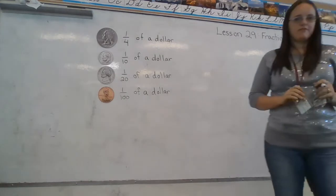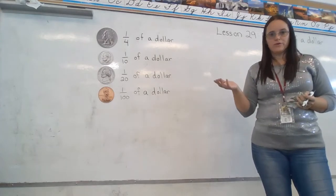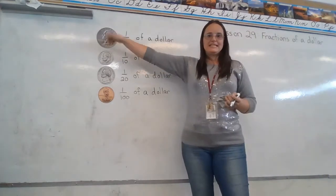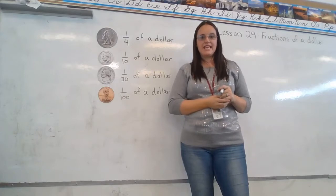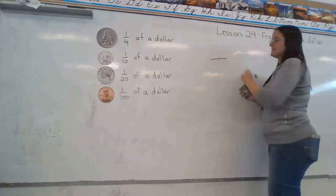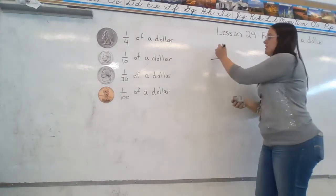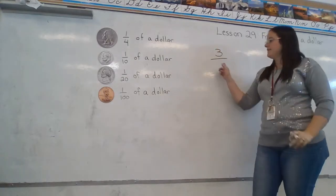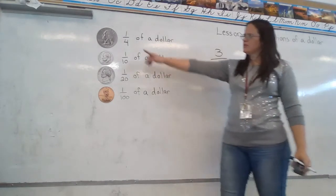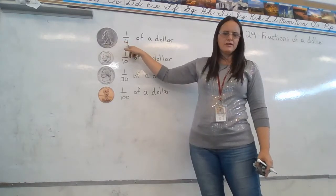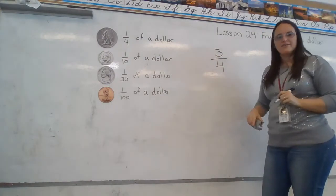The next type of fraction problem you might see is a word problem with money. It says Tom held three quarters in his hand — he had three of them. What fraction of a dollar did Tom have in his hand? Remember the numerator tells us how many we are talking about. Tom had three quarters, so we have to put three here. The denominator tells us how many equal the whole dollar. How many quarters make a dollar? Four. So we're going to put four, and Tom had three-fourths of a dollar in his hand.